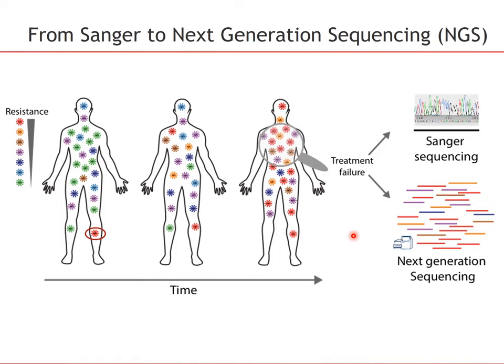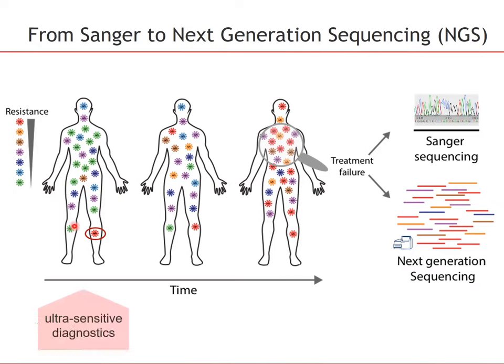Sanger sequencing only provides the average of the virus population — the consensus sequence of the viruses. It is not able to resolve variants of lower frequency. This is opposed to next generation sequencing, or NGS for short, which can be performed at very deep coverage and allows for quantifying viral variants that pre-existed in the virus population also at lower frequencies. This is a way to increase the sensitivity of viral diagnostics.